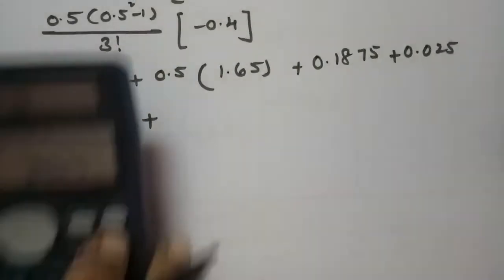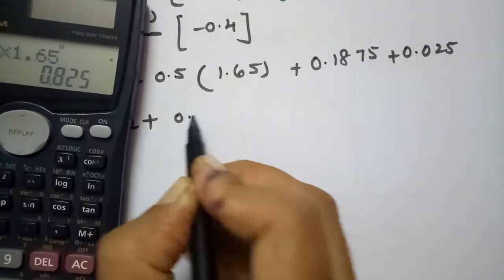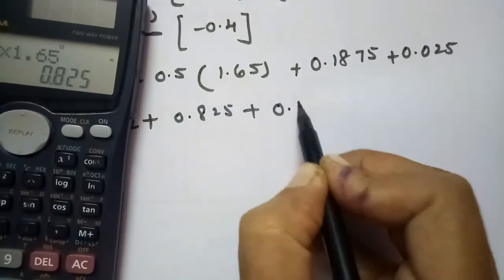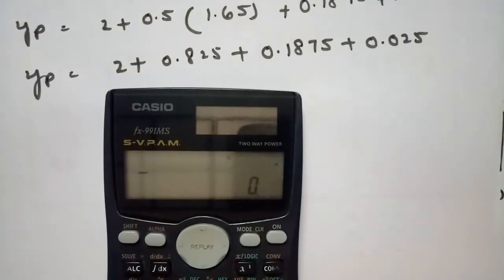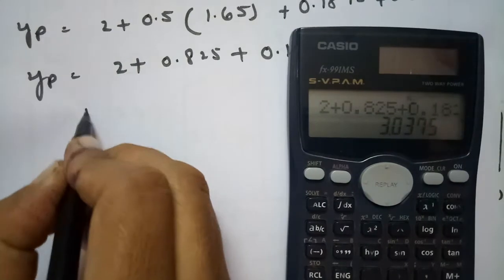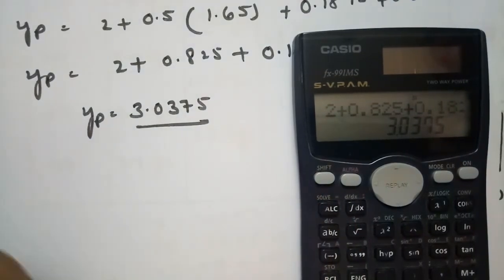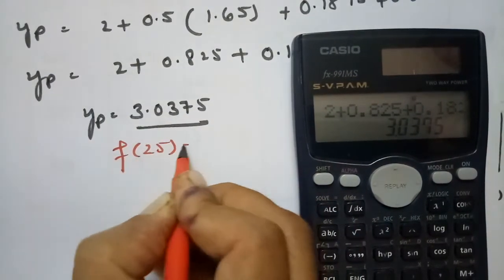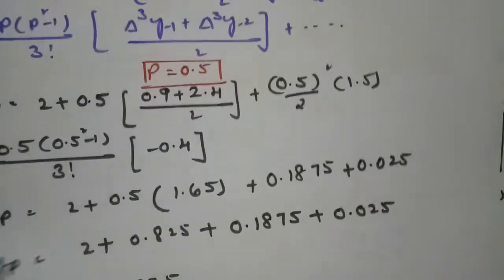Summing all terms: 2 + 0.825 + 0.1875 + 0.025 = 3.0375. Therefore, f(25) = 3.0375.